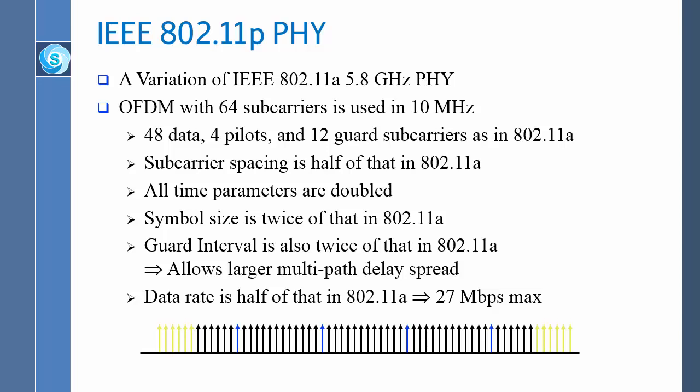All the time parameters are doubled: symbol size is twice as long, and guard interval is also twice as long. They kept the guard interval at the same fraction of the symbol size. In 802.11 Wireless HD, the guard interval was one-eighth of the symbol size.